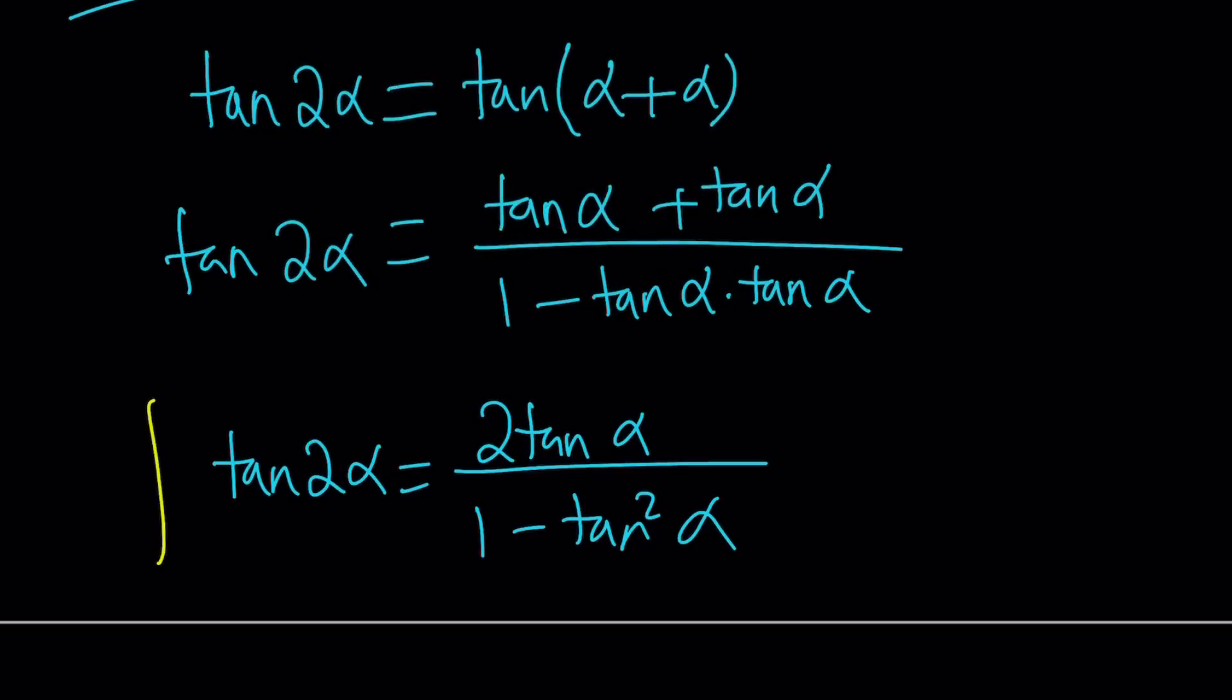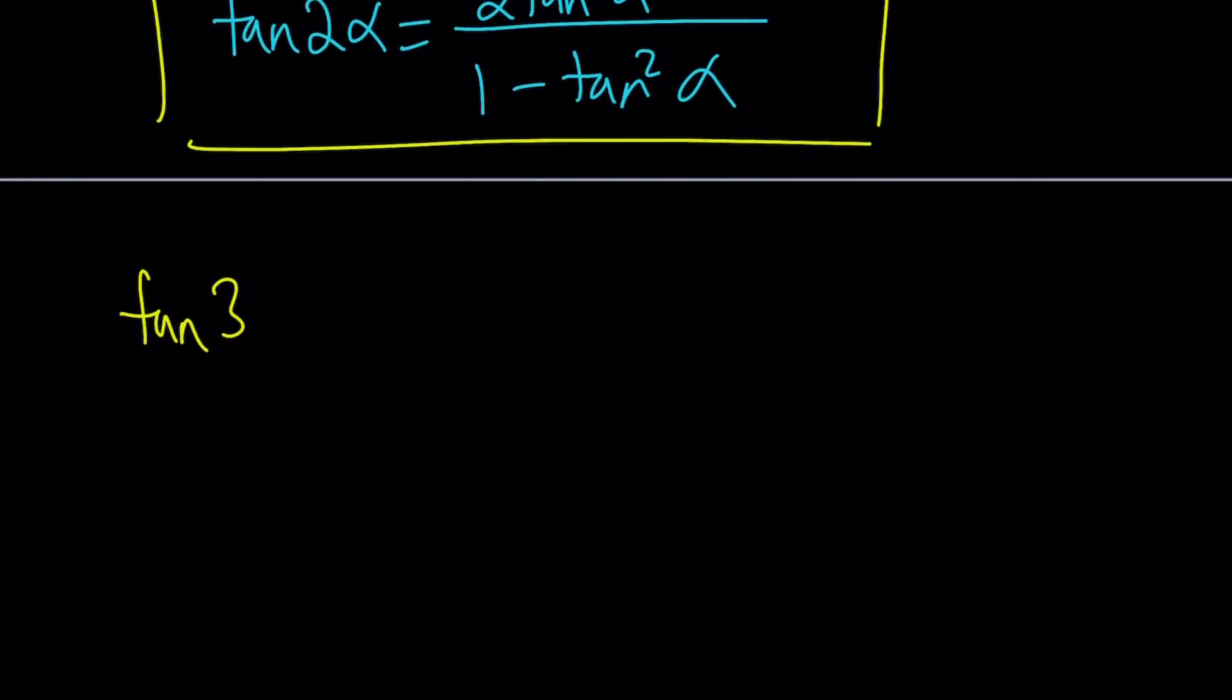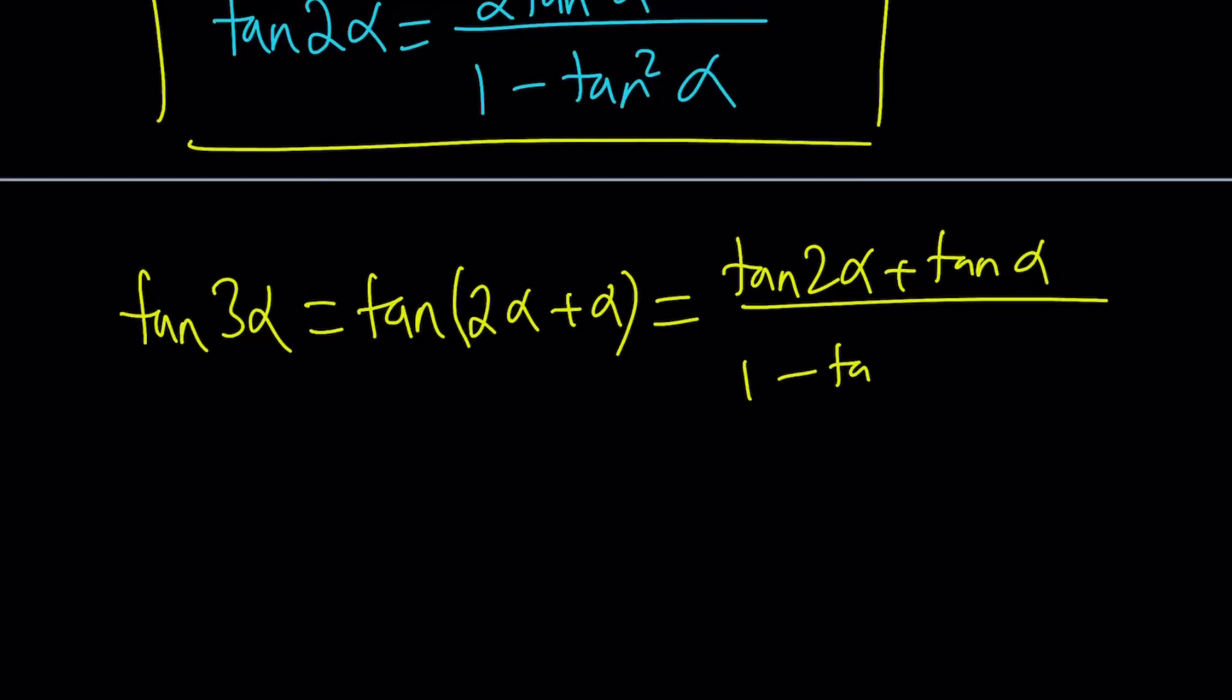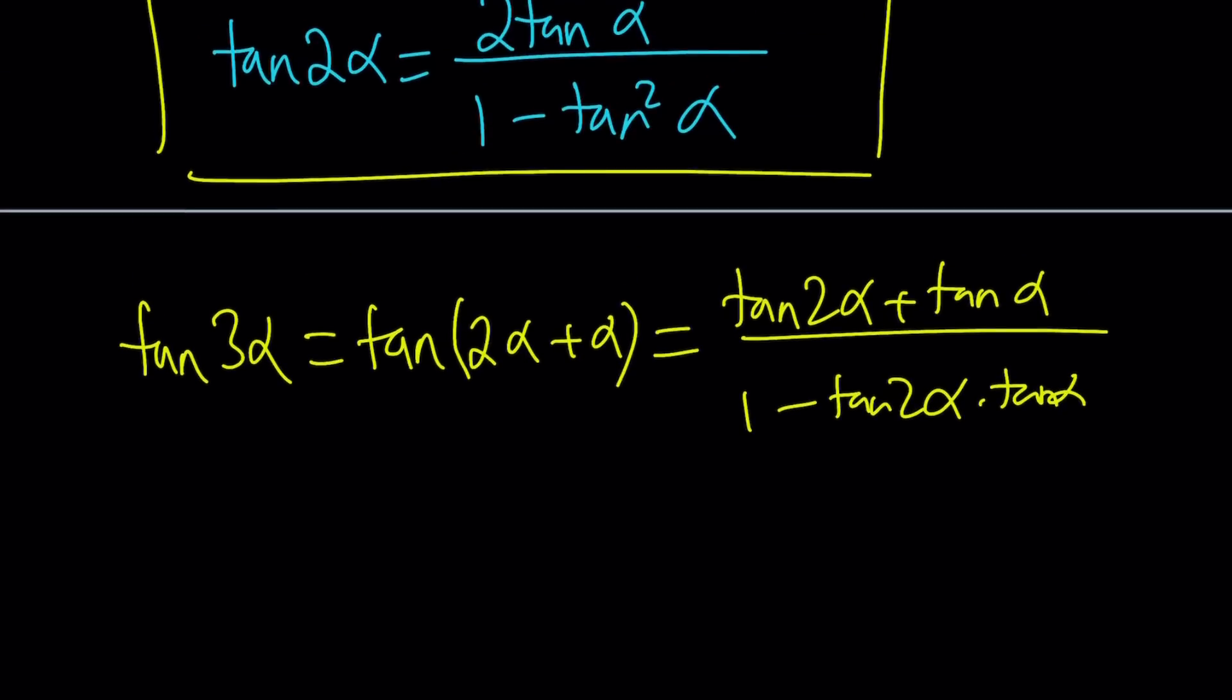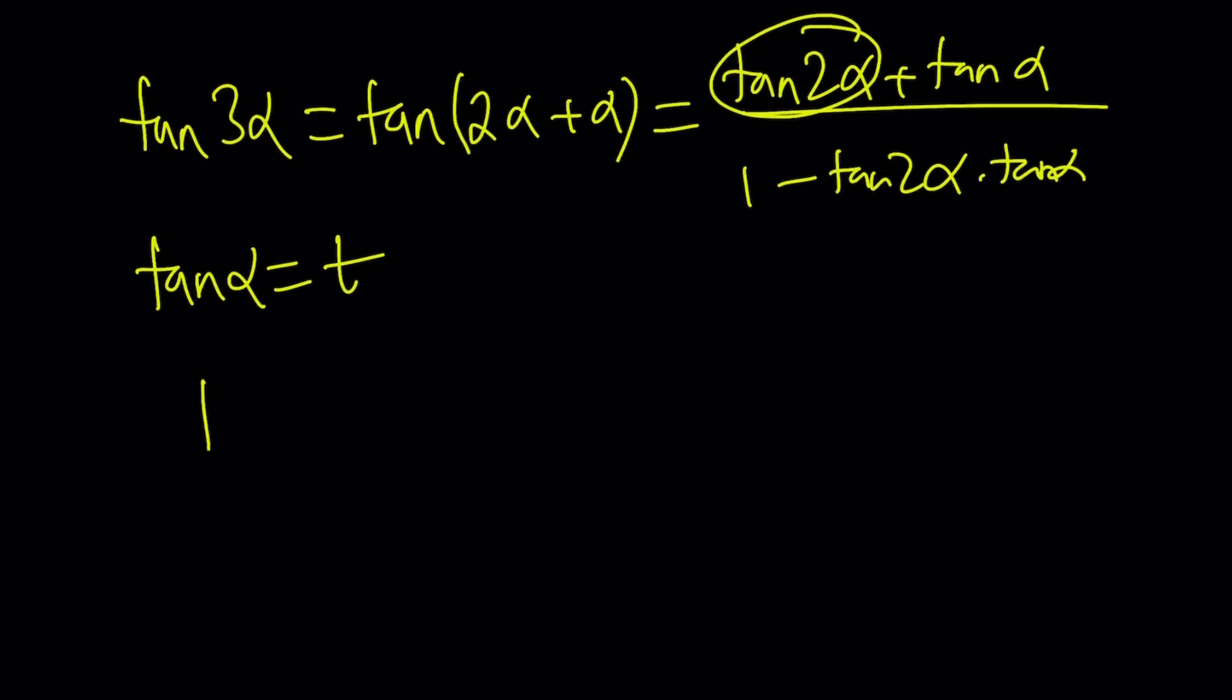Great. Now, we're going to find the triple angle formula from here. How? Tangent 3 alpha can be written as tangent 2 alpha plus 1 alpha, right? And now we're going to use the sum formula, which is tangent 2 alpha plus tangent alpha divided by one minus tangent 2 alpha times tangent alpha. Okay? Sorry for the sloppy writing. And then I'm going to replace tangent 2 alpha with 2 tangent alpha, so on and so forth. But in this case,